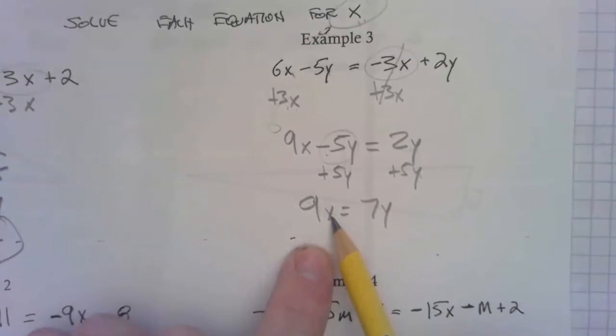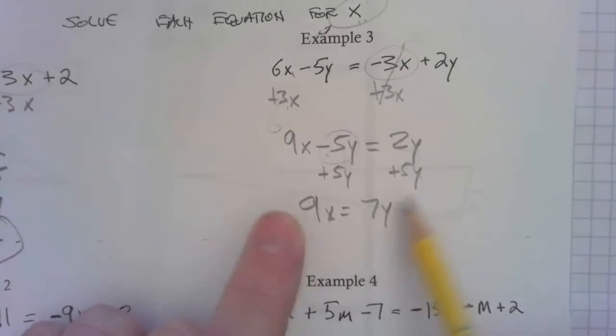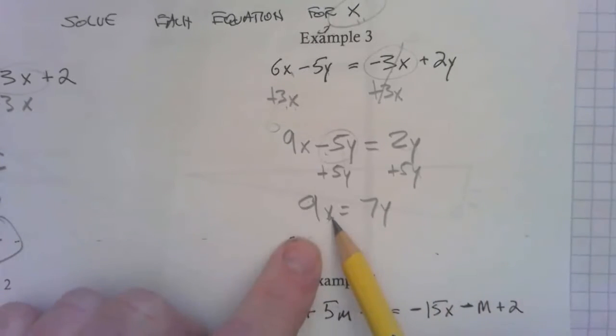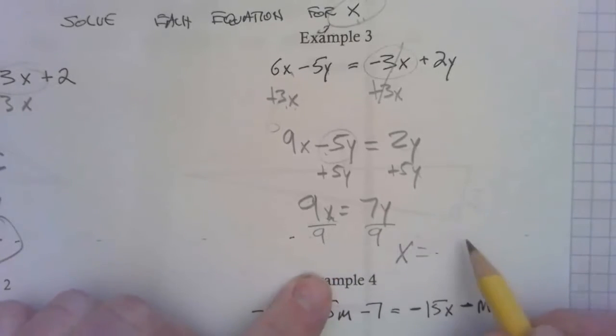Remember, all I'm trying to do is get x by itself. I do not care what's going on over here, I don't care. X is the thing I've got to get by itself. So I'm going to divide both sides by 9, and x ends up being 7 ninths of y. I don't know why, so I can't give you the number, but I did my job. I solved it for x.